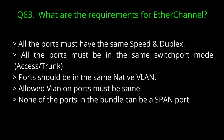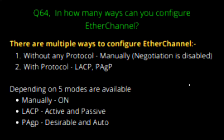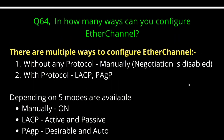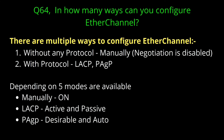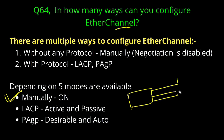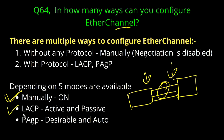Now the next question — question number 64: in how many ways can we configure EtherChannel? We have three ways. First is statically — you manually configure EtherChannel on both sides. Second and third use protocols: LACP and PAgP. So there are three ways to configure EtherChannel: manually, using LACP, or using PAgP.